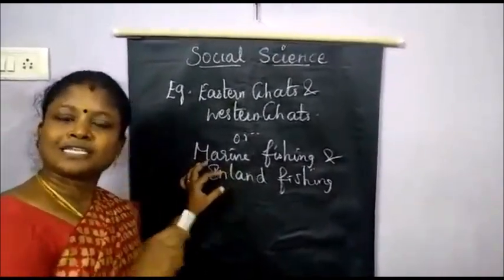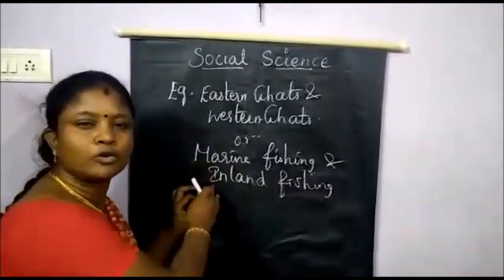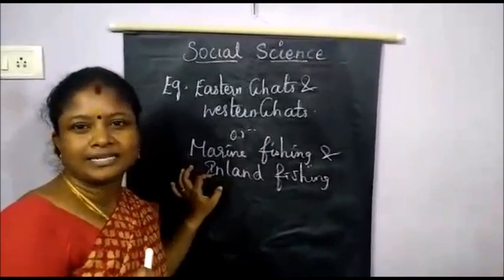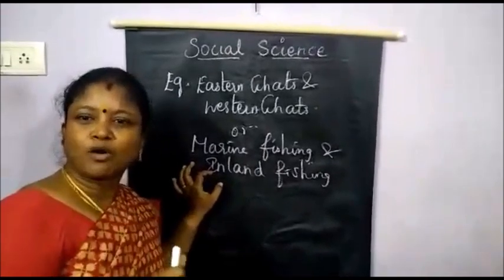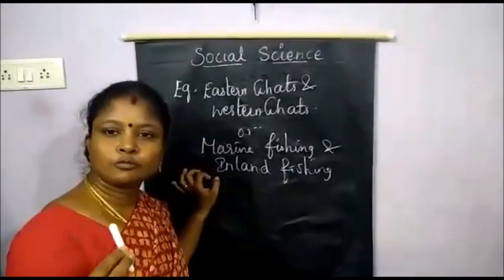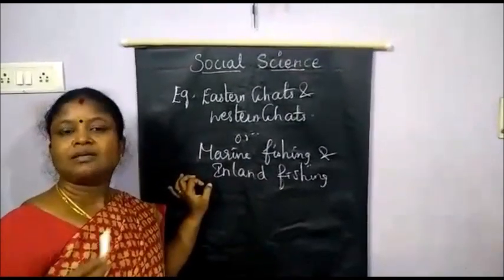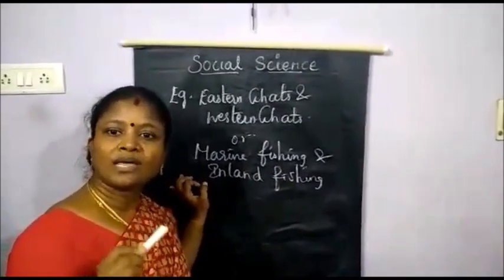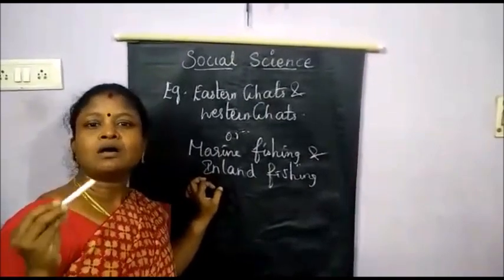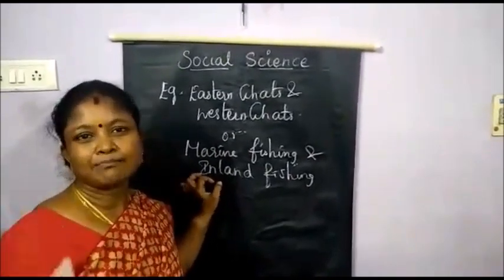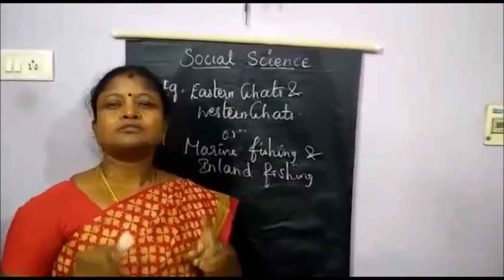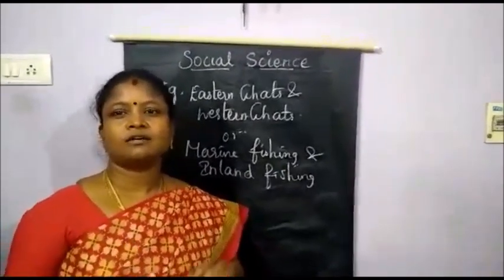First, you have to explain the meaning. Second point: where it is located. Third point: its importance and its uses. Fourth point: some examples. Next, reason — why they ask you to give a brief answer, why it is important. They will ask you to write to distinguish and give one reason.